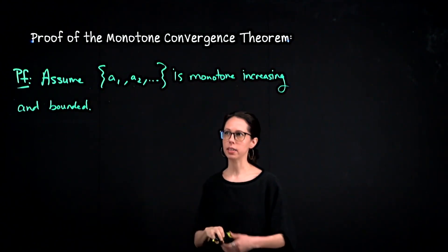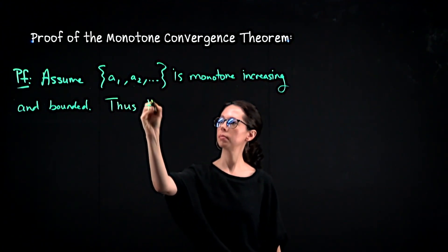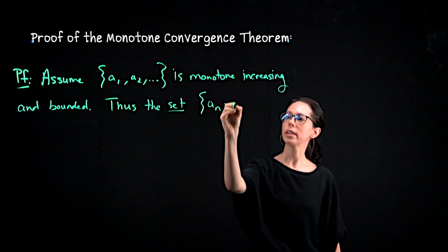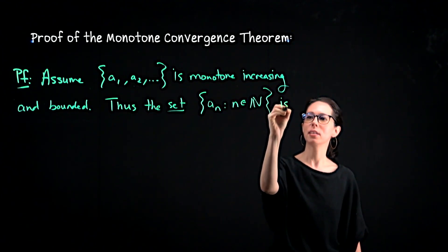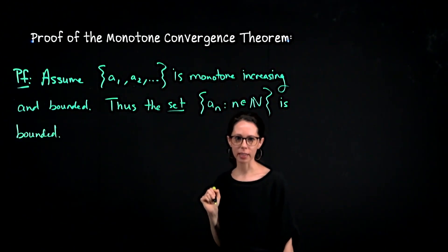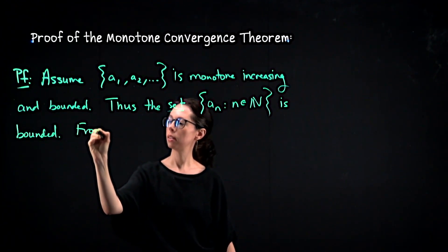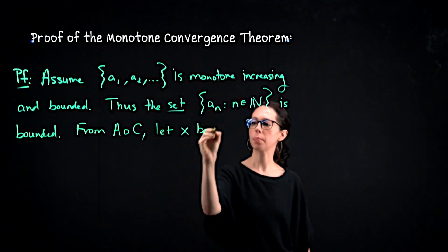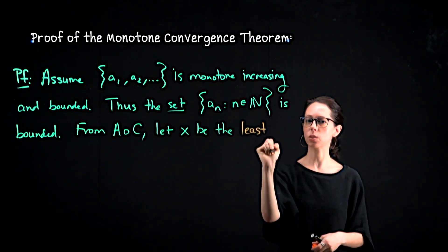Since the sequence is bounded, the set consisting of the sequence terms is bounded. So the set of numbers of the form a sub n is bounded. By the axiom of completeness, it has a least upper bound. From the AOC, let x be the least upper bound. The existence of x is what that axiom gives us.